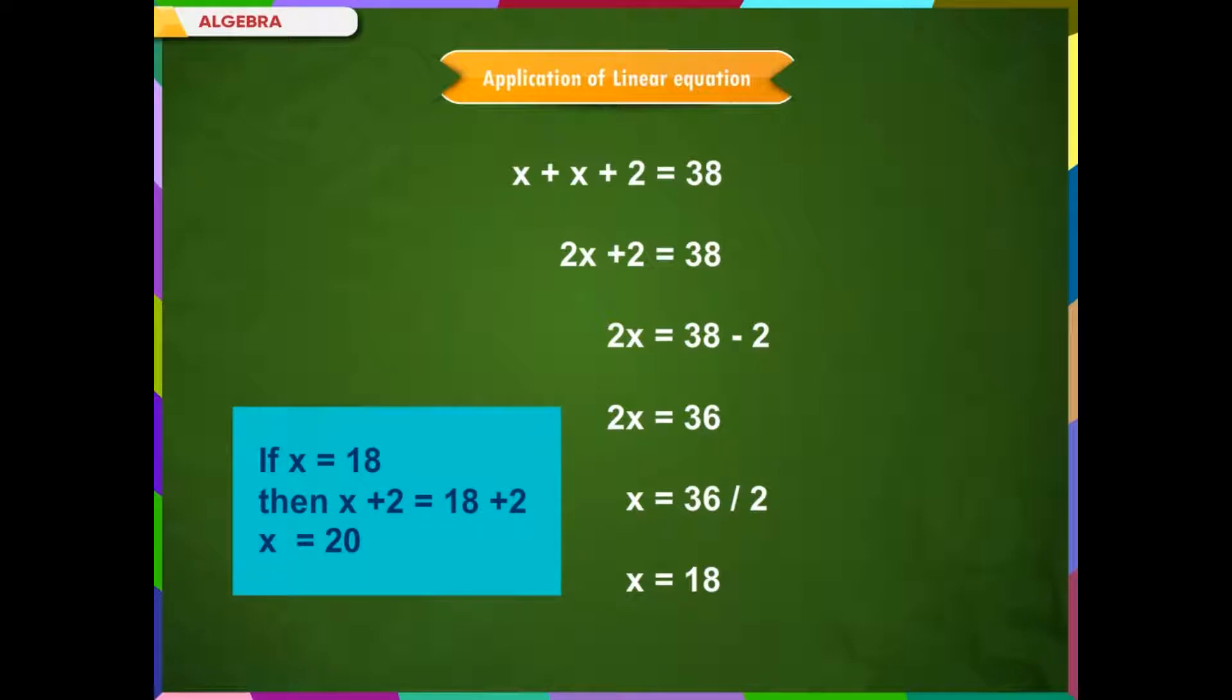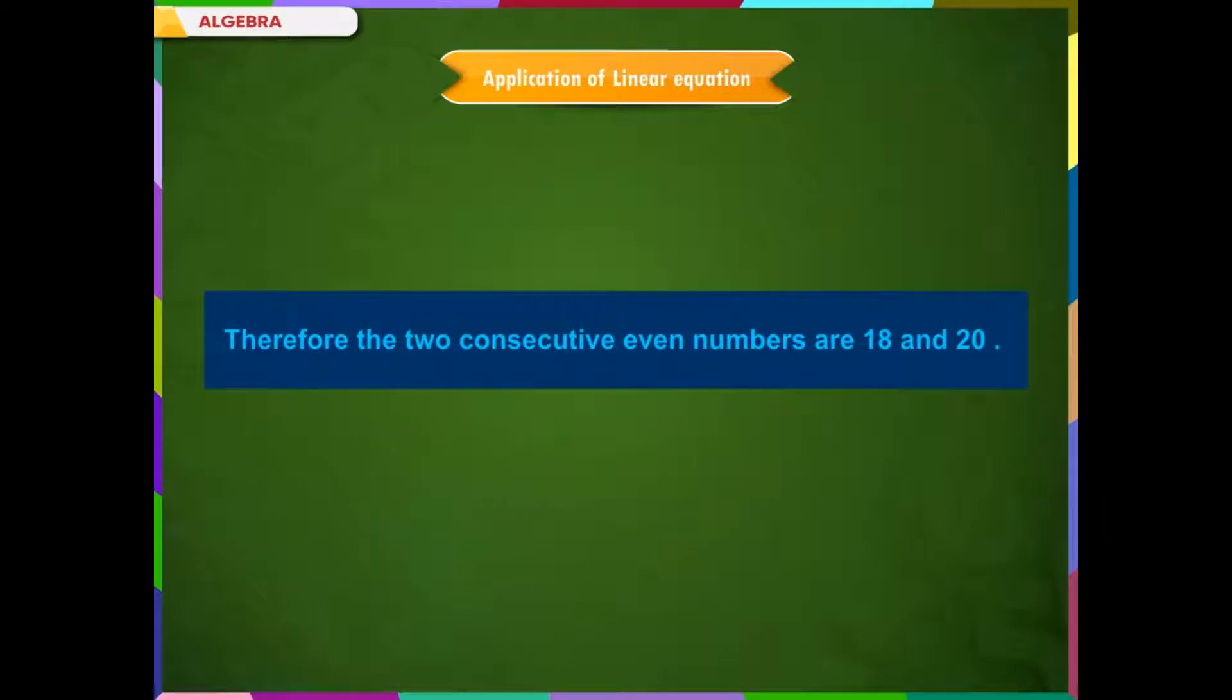If x is equal to 18, then x plus 2 is equal to 18 plus 2, which is equal to 20. Therefore, the two consecutive even numbers are 18 and 20.